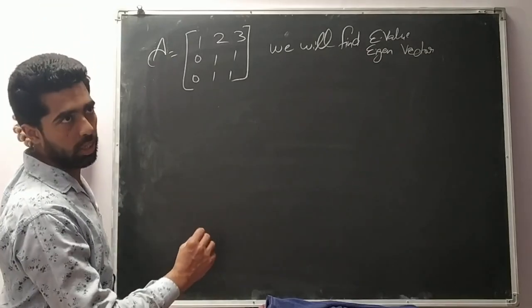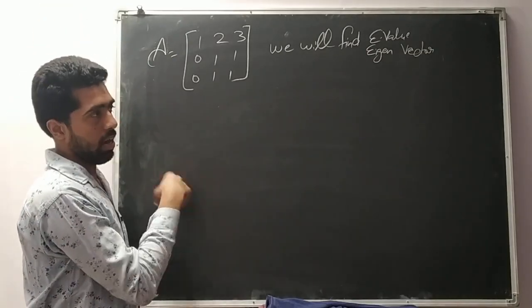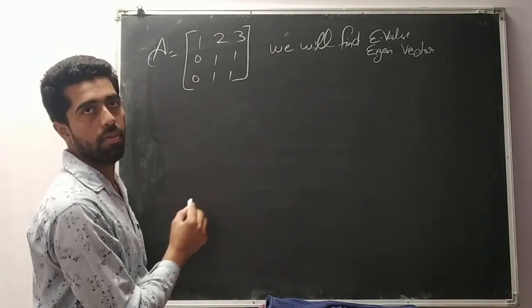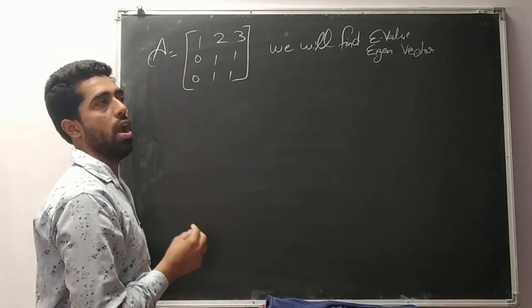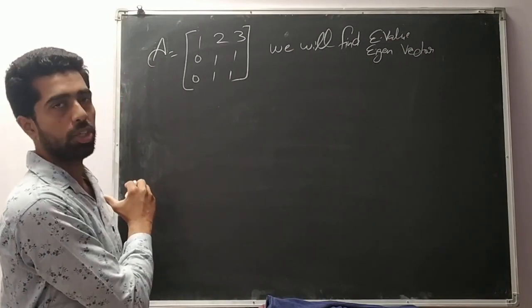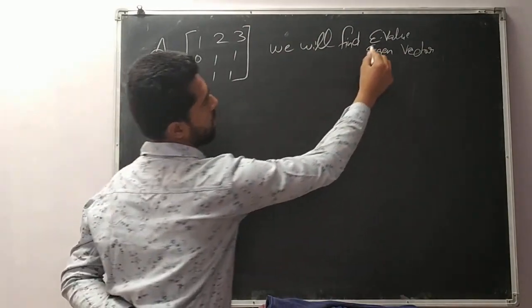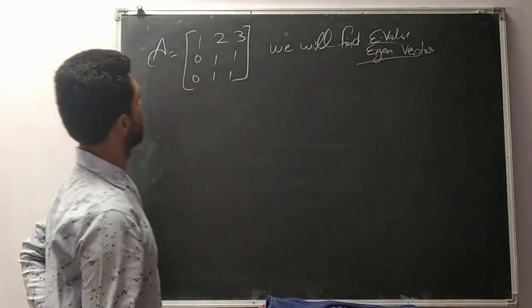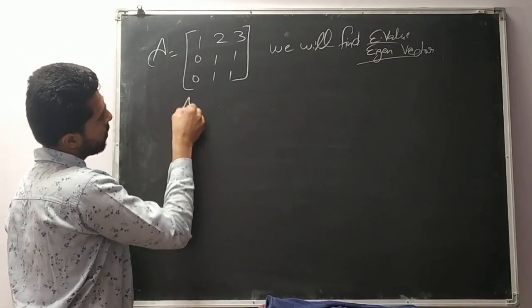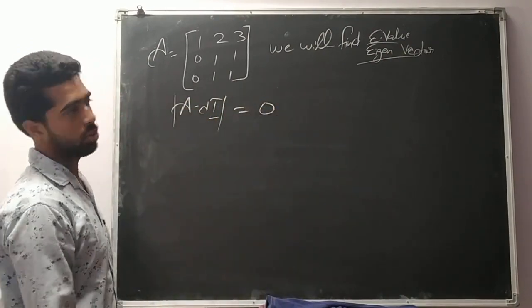We will do two questions and summarize the concept of eigenvalue and eigenvector and minimal polynomial, especially minimal polynomial. Here firstly we will find eigenvalue and eigenvector. How to find eigenvalue? A minus lambda, determinant equal to 0.